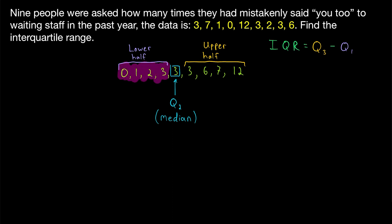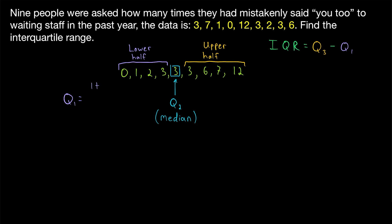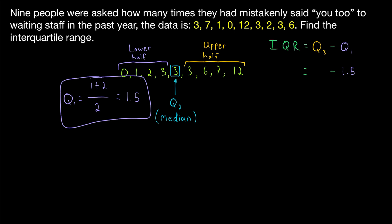We have an even number of data points in our lower half. When we have an even number of data points, there won't be a single number in the middle. Instead, there will be two numbers in the middle, and we take their average — that is the median of the lower half. So the first quartile is the average of the two middle numbers, the average of one and two. One plus two divided by two is three divided by two, which is 1.5. So 1.5 is our first quartile — it is halfway between one and two.